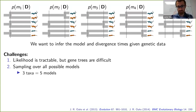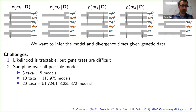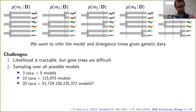With only three pairs of populations it's a trivial problem — there are only five models. But when we have 10 pairs, there are over 115,000 models. With 20 pairs, we're up to over 51 trillion models. So the problem explodes pretty quickly.